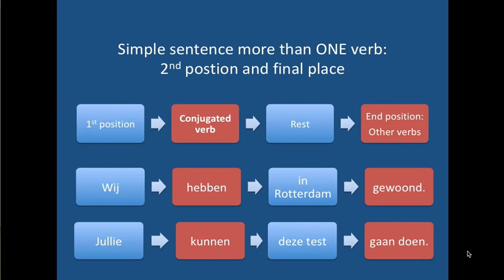Here is another example — I want to make this very clear. Here you can see the two pillars, the pillars in second place. 'We hebben in Rotterdam gewoond.' 'Jullie kunnen deze test gaan doen.'